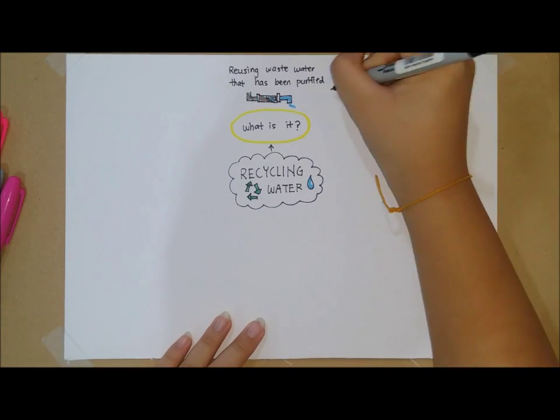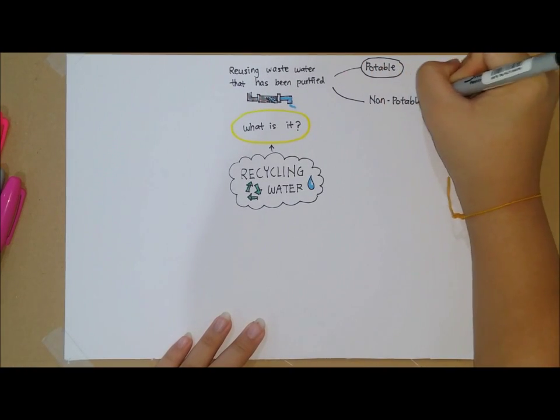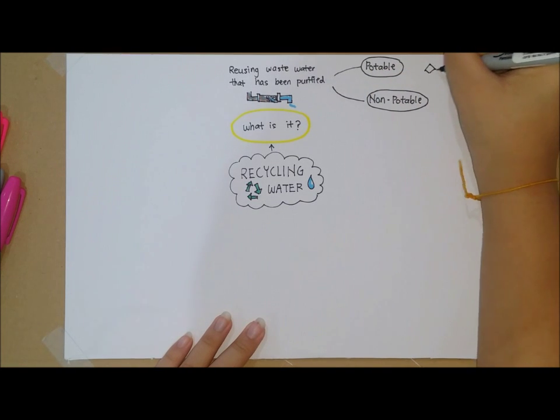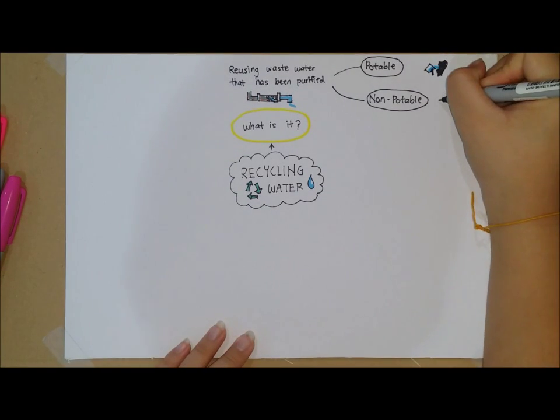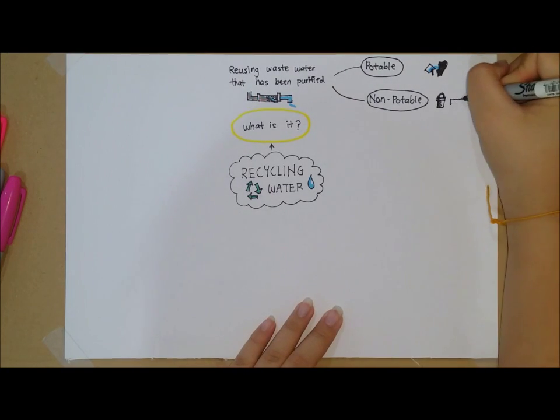There are two types of recycled water: potable and non-potable. Potable recycled water is safe to be used for drinking purposes. Non-potable recycled water is not safe to be used for drinking purposes.